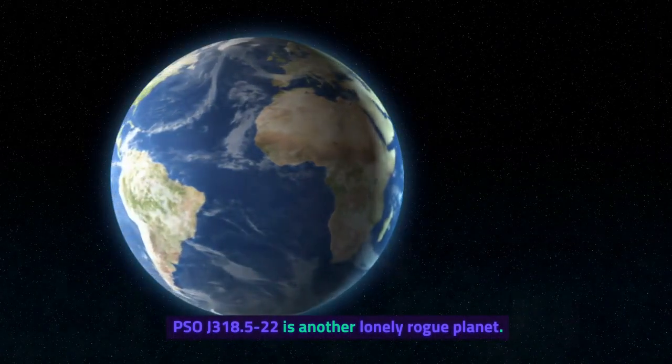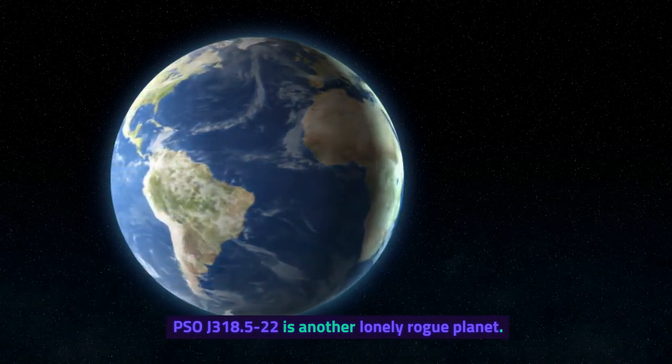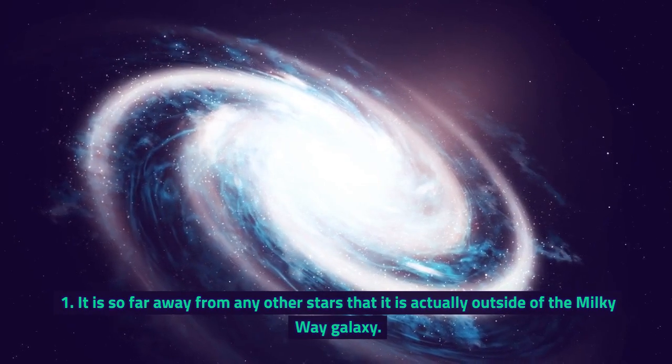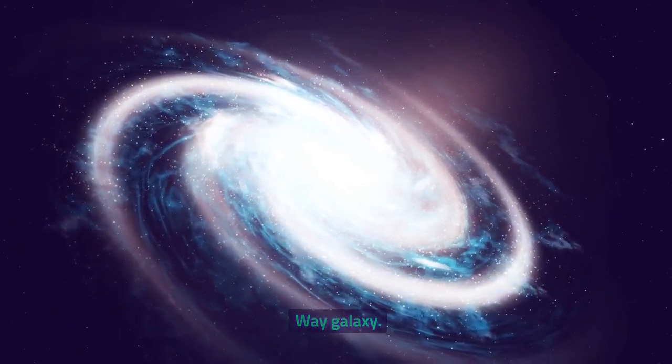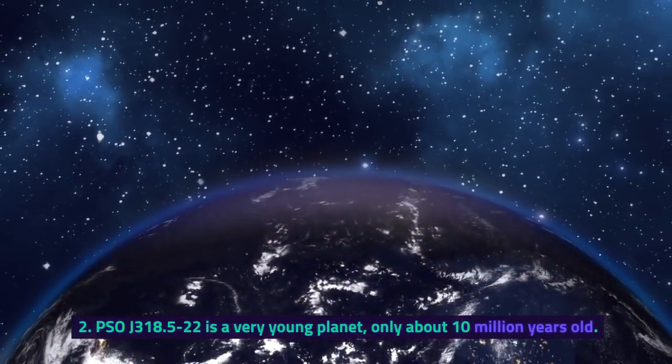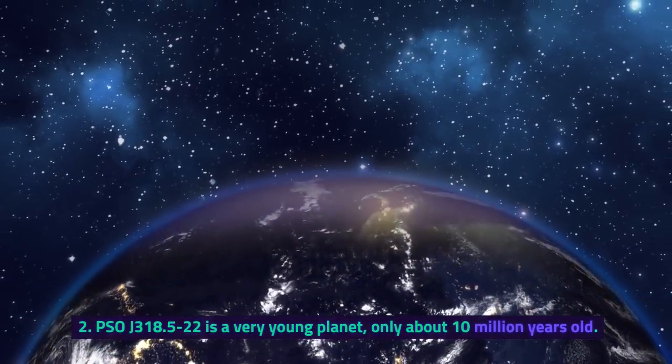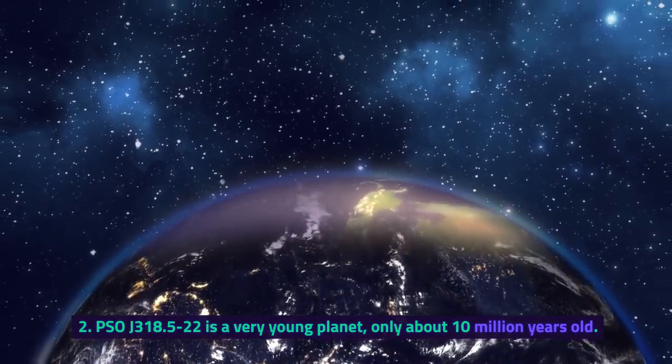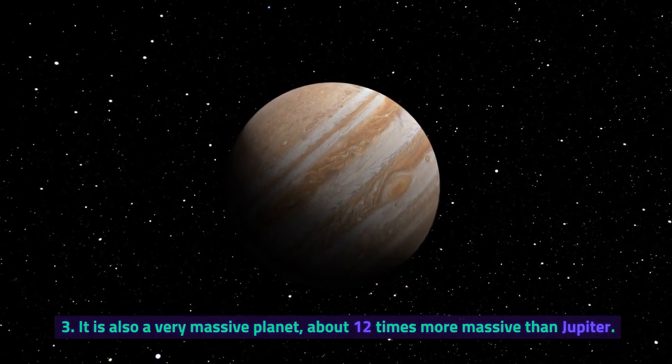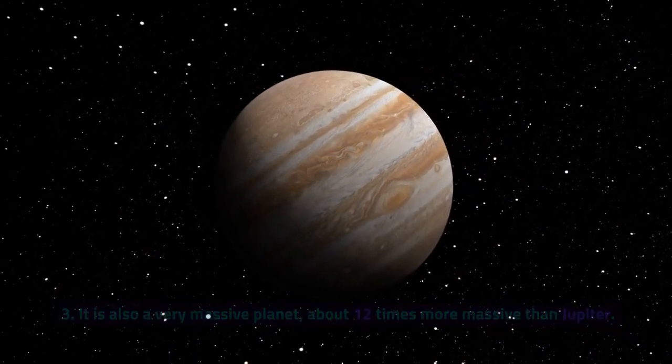Paseo J318.522 is another lonely rogue planet. It is so far away from any other stars that it is actually outside of the Milky Way galaxy. Paseo J318.522 is a very young planet, only about 10 million years old. It is also a very massive planet, about 12 times more massive than Jupiter.